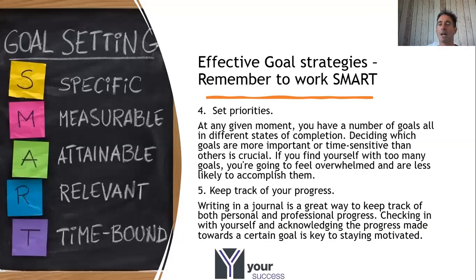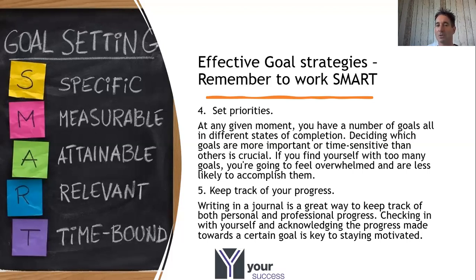Set priorities — at any given moment you have a number of goals in different states of completion. Decide which goals are more important or time-sensitive. If you find yourself with too many goals you're going to feel overwhelmed and less likely to accomplish them. Focus on two or three goals, get them done, and then move on to the next ones. Multitasking doesn't always work with goals you're working towards.